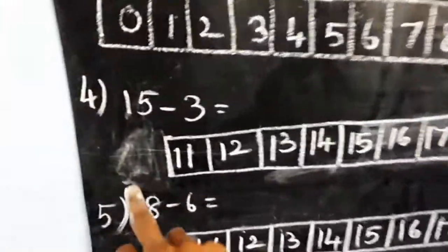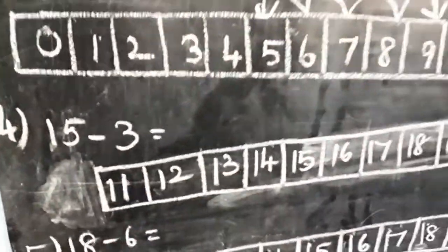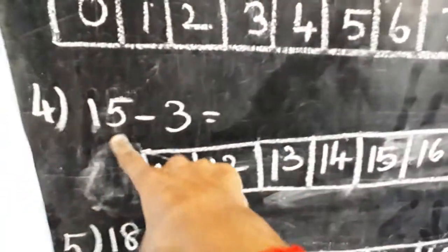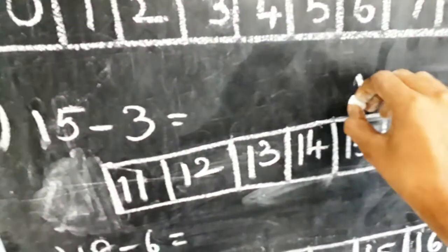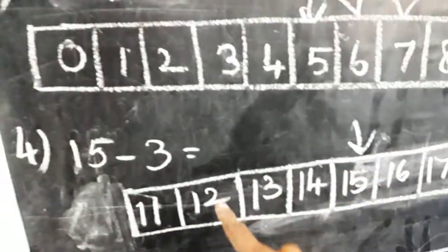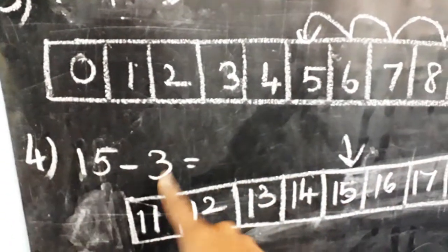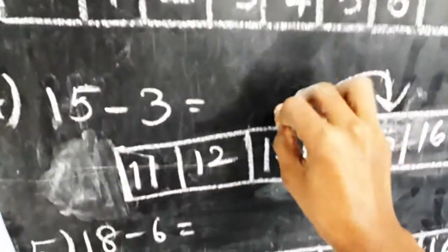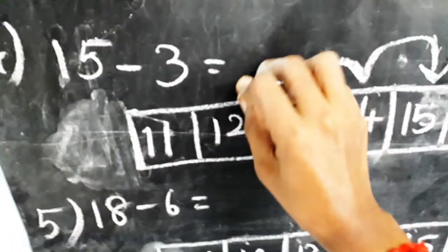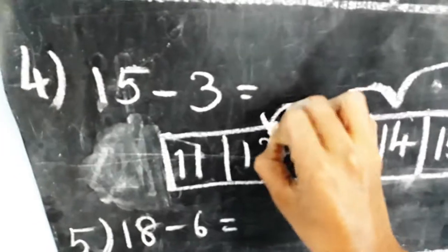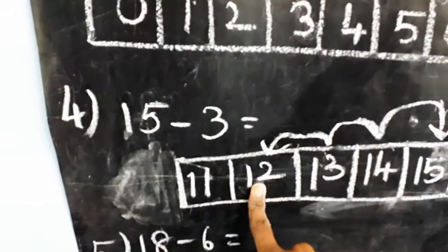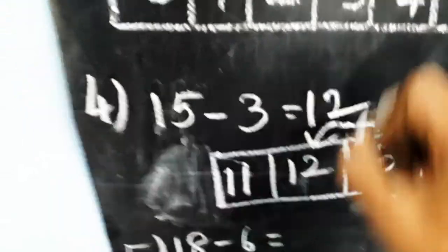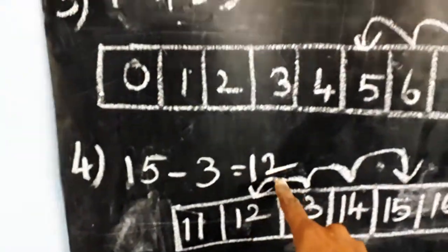Now look at the fourth sum: fifteen minus three. So we are starting from which number? Yes, fifteen. We are going to backward of three numbers: one, two, three. So the answer — which number did you reach? Yes, twelve. So the answer is twelve. Fifteen minus three is equal to twelve.